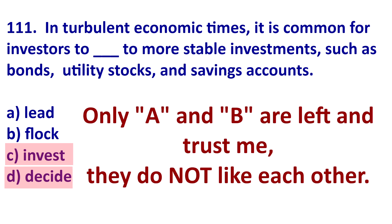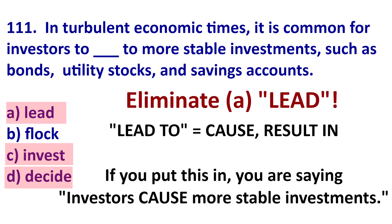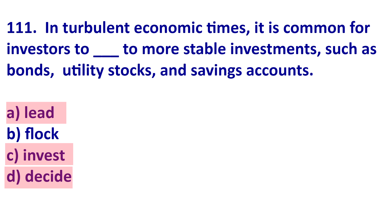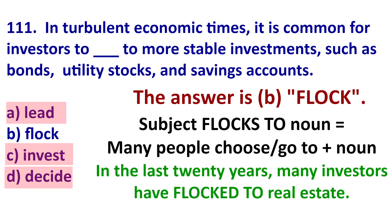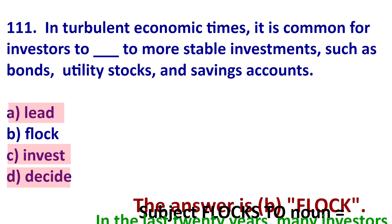Now we have A and B. We can eliminate A because 'lead to' equals 'cause' and 'result in.' Saying 'investors result in more stable investments' is strange and doesn't make sense in context. It is much more logical to pick B, 'flock to.' This is when groups of people choose or go somewhere — for example, 'tennis fans flock to London when Wimbledon starts,' or 'in the last 20 years many investors have flocked to real estate.' It means many people run or move in a certain direction.